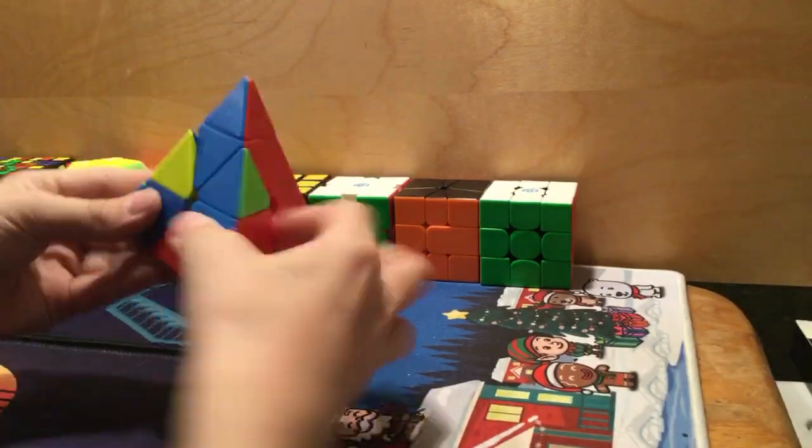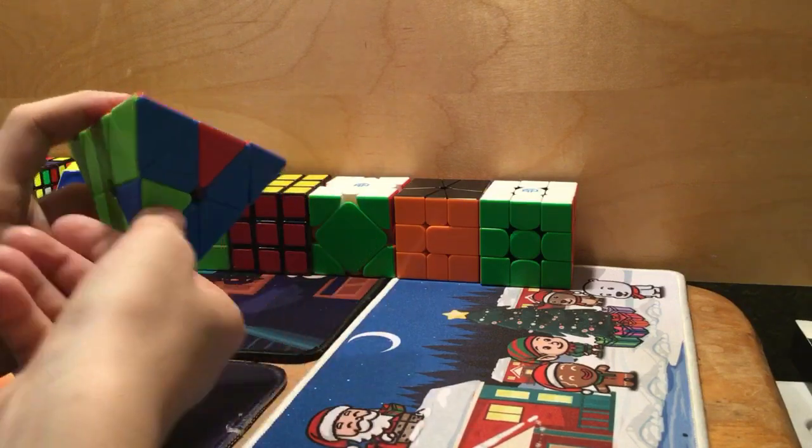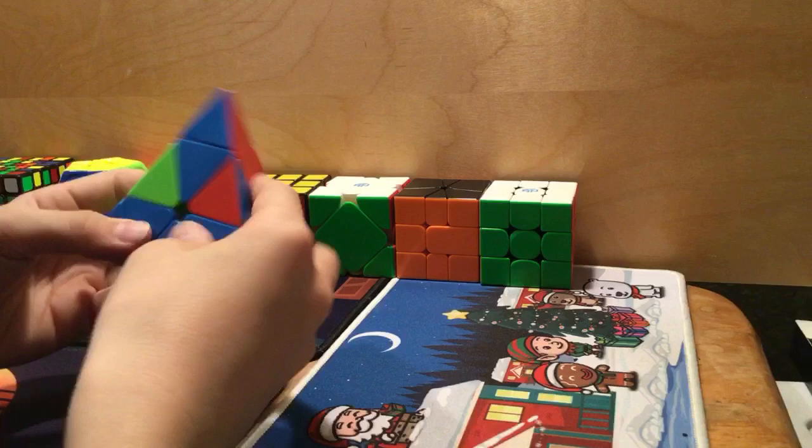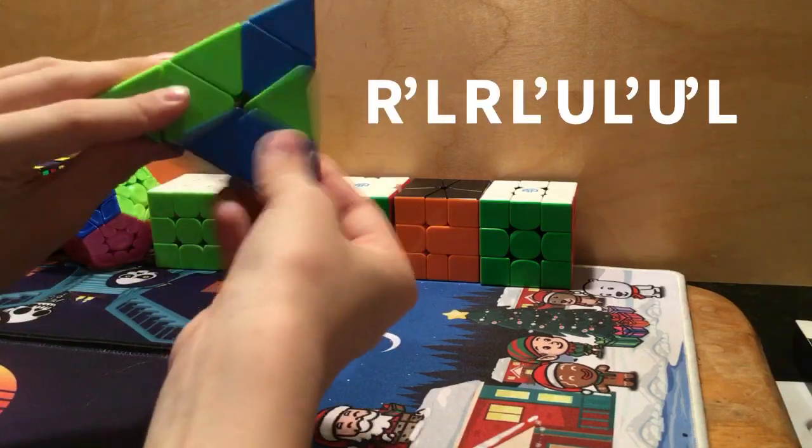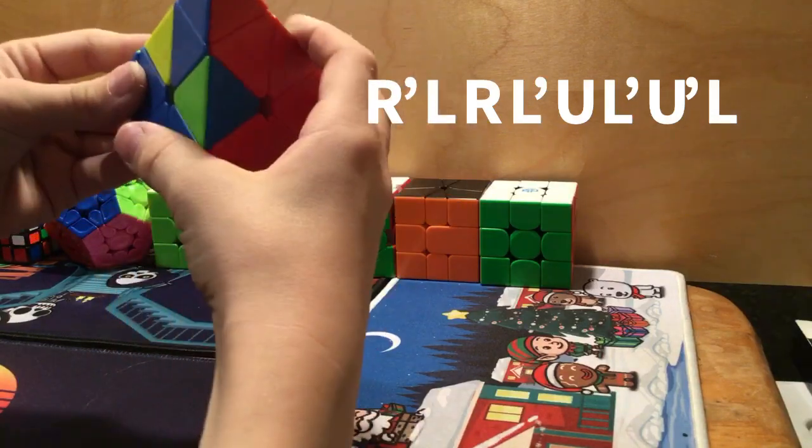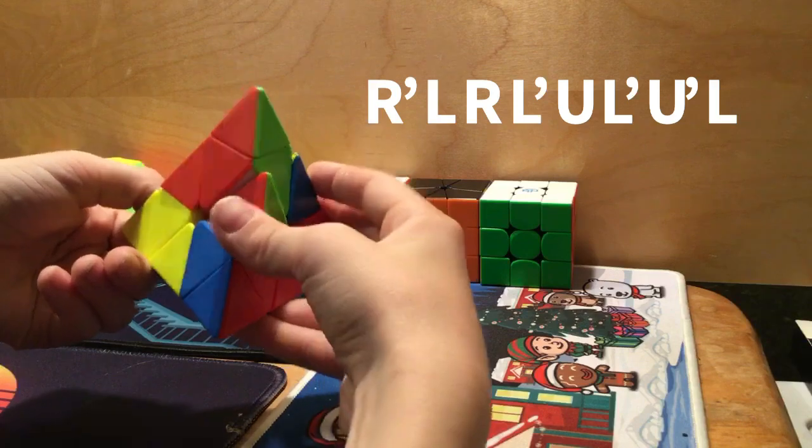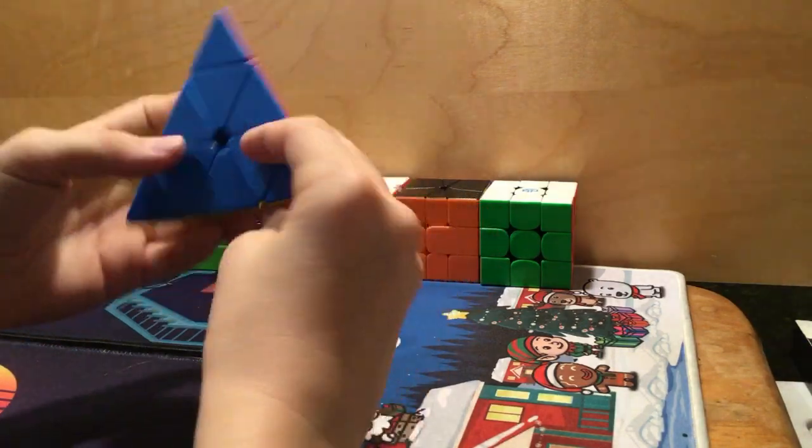And now we're going to have a couple more cases. One is like this, where these edges need to flip. And the way you do that is first you do a right-handed sledgehammer, then insert this into here by going like this. Turn the top up like that, and then down.